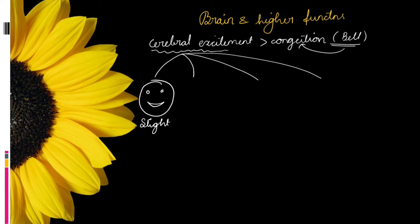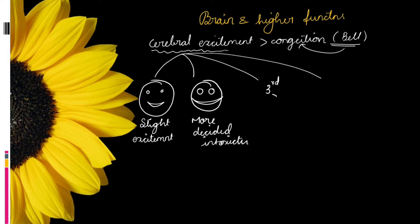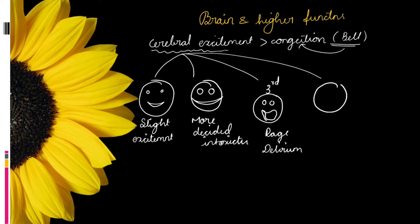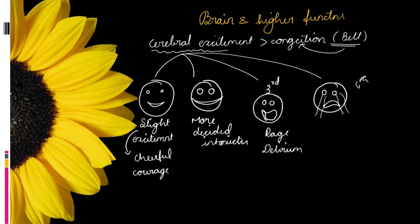In the second stage, Babu is laughing excessively with more decided intoxication. The third stage brings mild delirium and rage — shouting and irrational behavior. In the fourth stage, the most sad state, Babu starts crying and goes into depression. In the first stage he is very cheerful, says he can do everything, leading to loquacity.